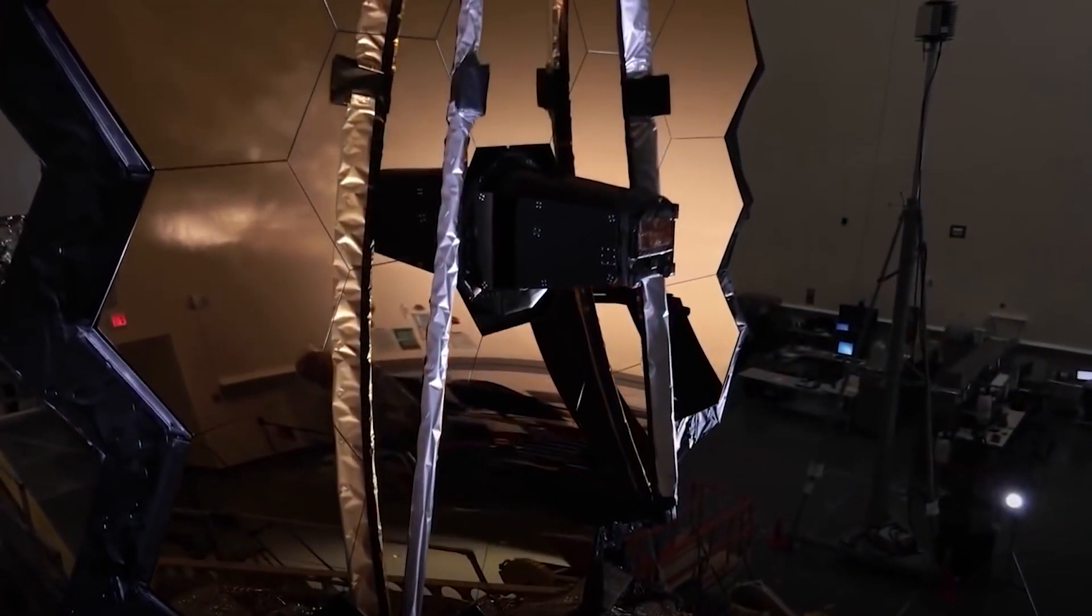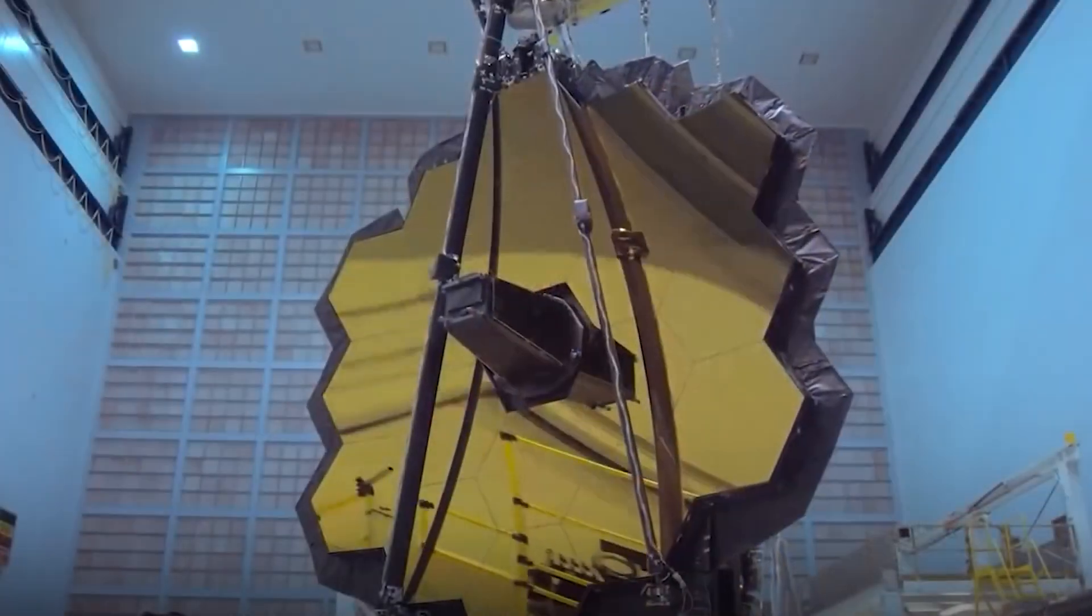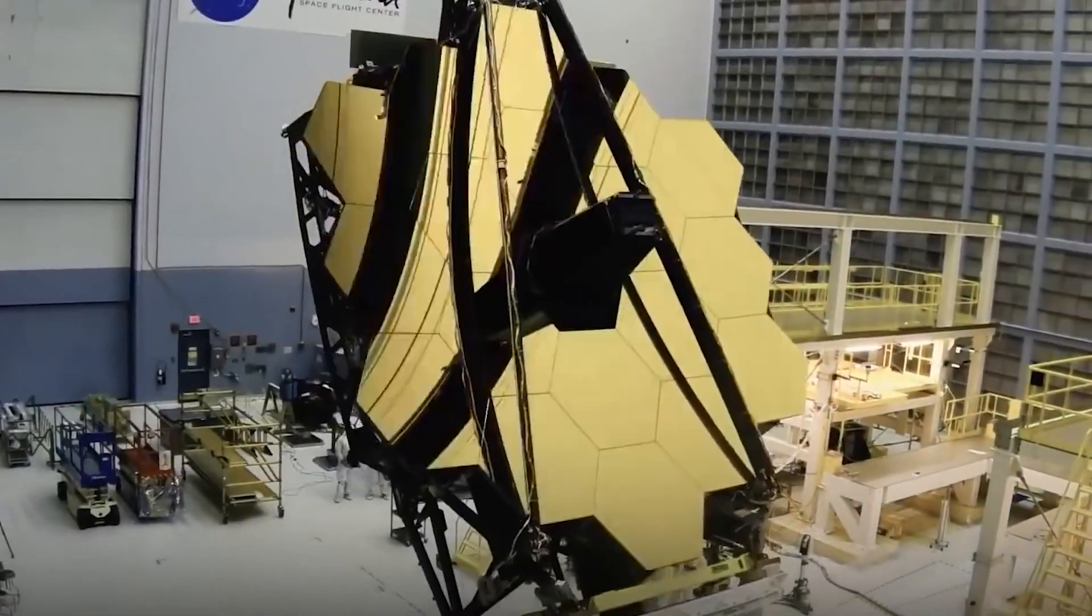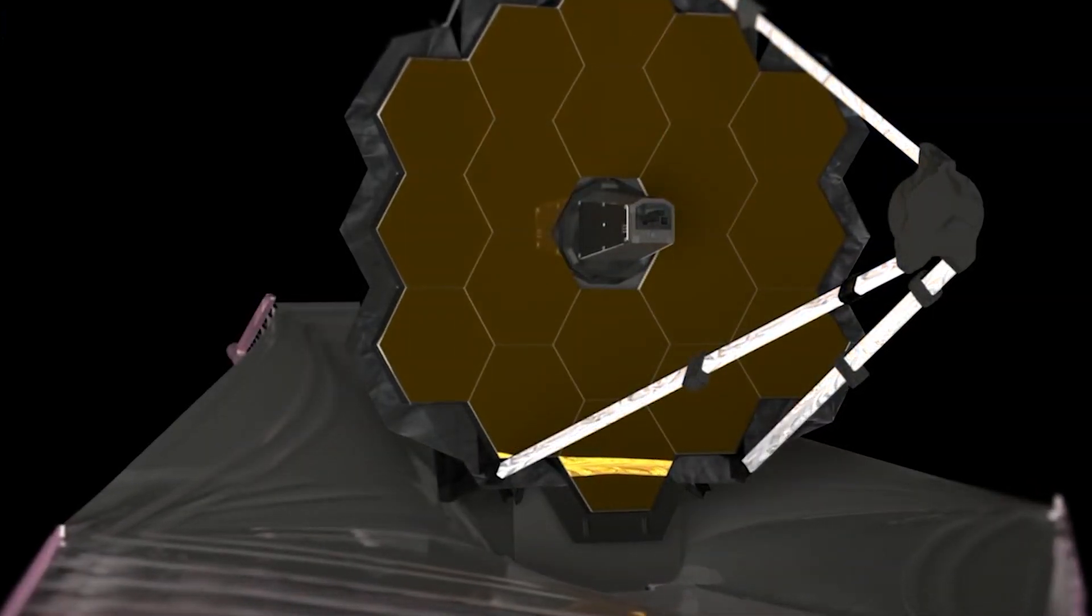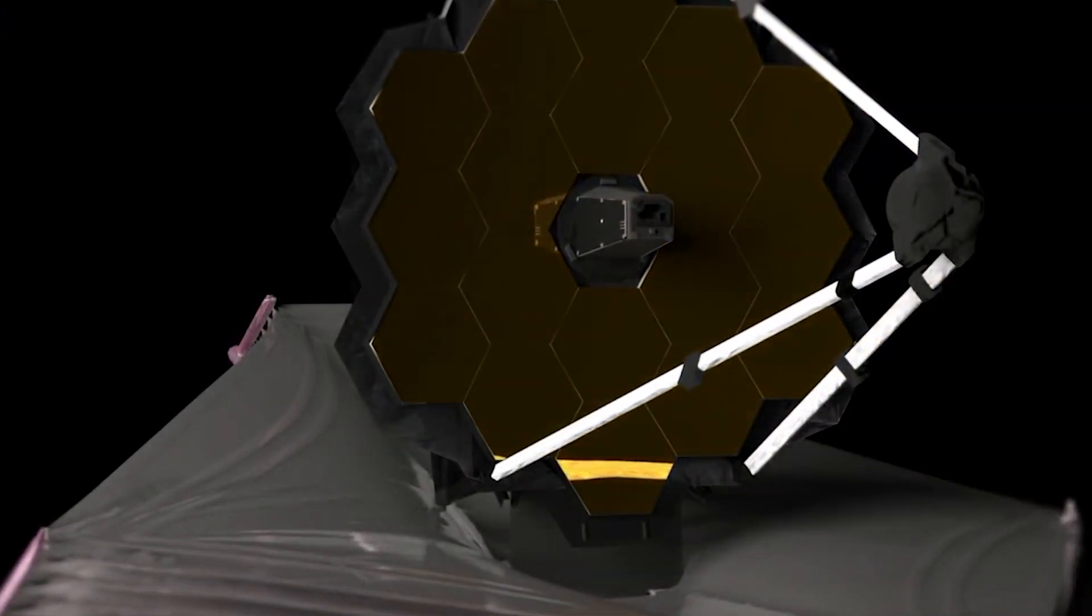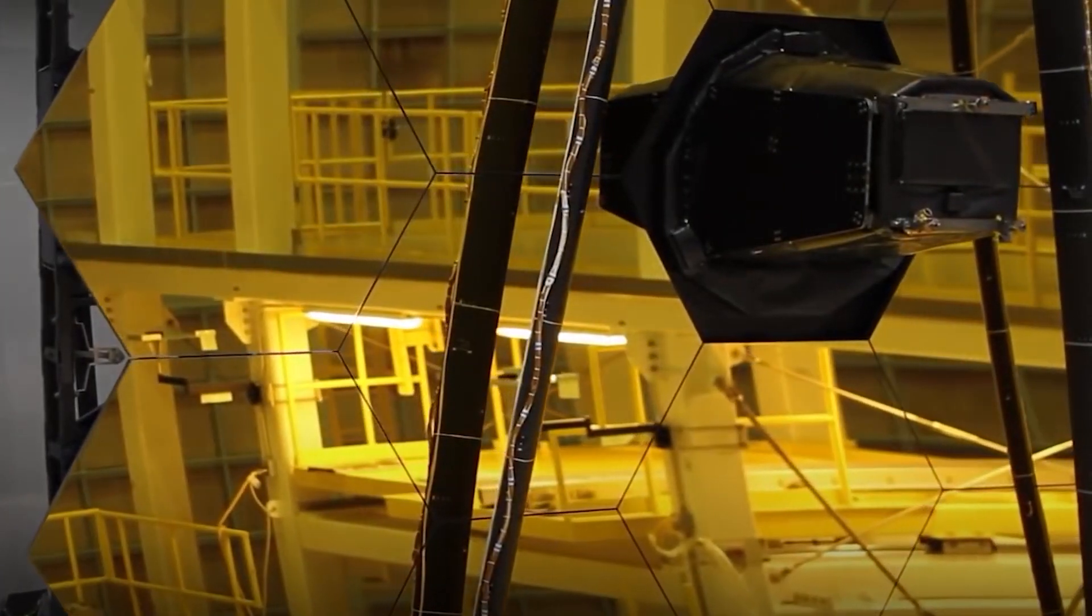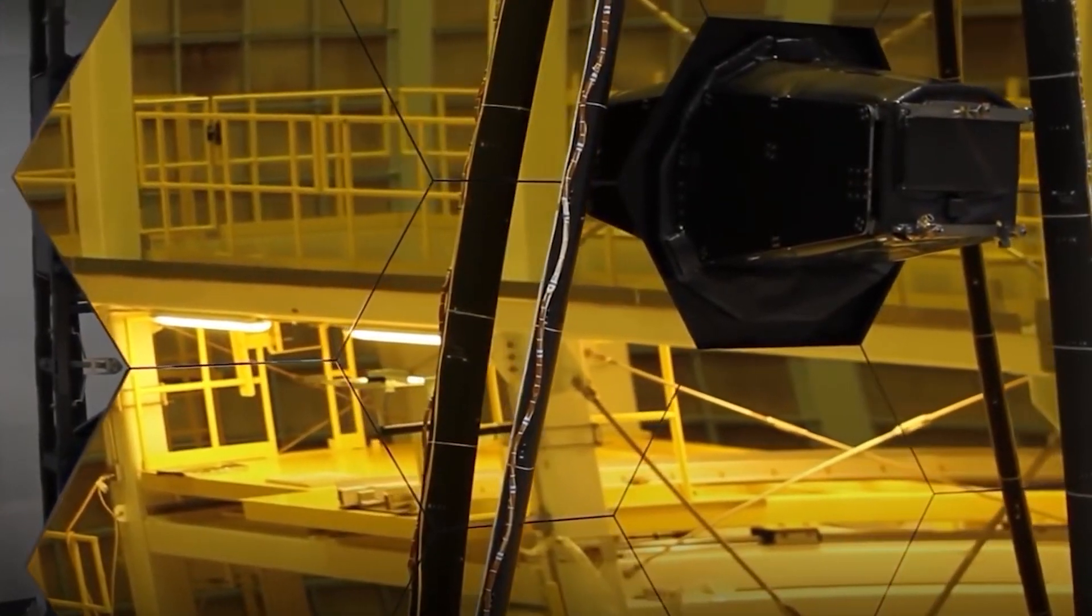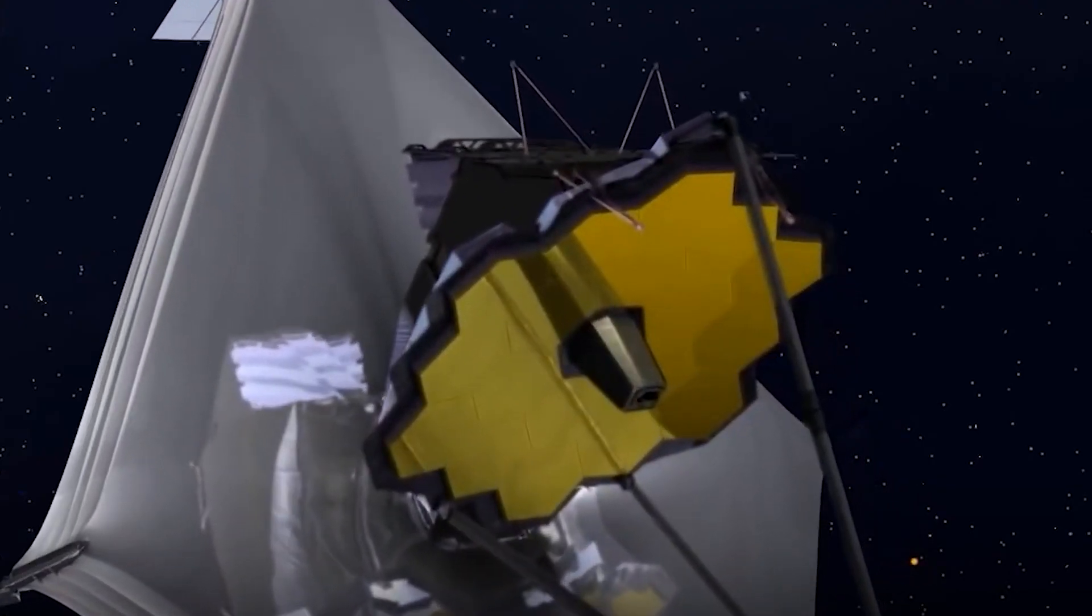Webb's successful deployment truly exemplifies the best of what NASA has to offer, the willingness to attempt bold and challenging things in the name of discoveries still unknown. Soon, Webb will also undergo a third mid-course correction burn, one of three planned to place the telescope precisely in orbit around the second Lagrange point, commonly known as L2, nearly one million miles from Earth. This is Webb's final orbital position, where its sunshield will protect it from light from the Sun, Earth, and Moon that could interfere with observations of infrared light.